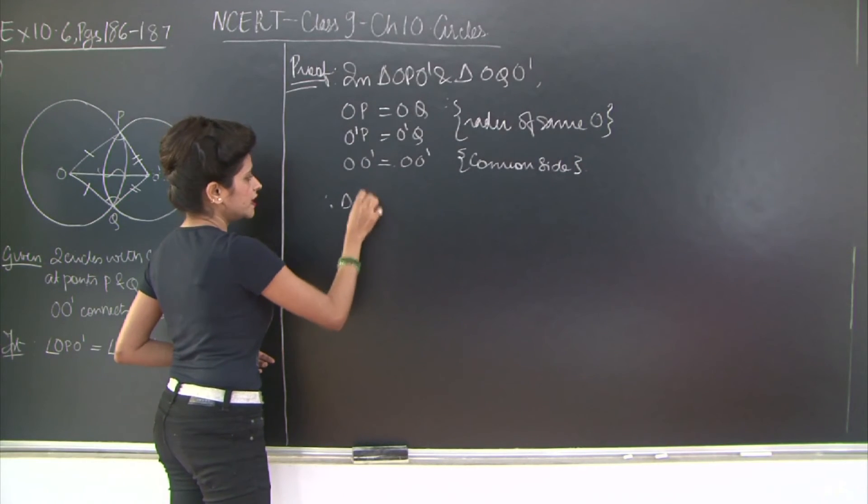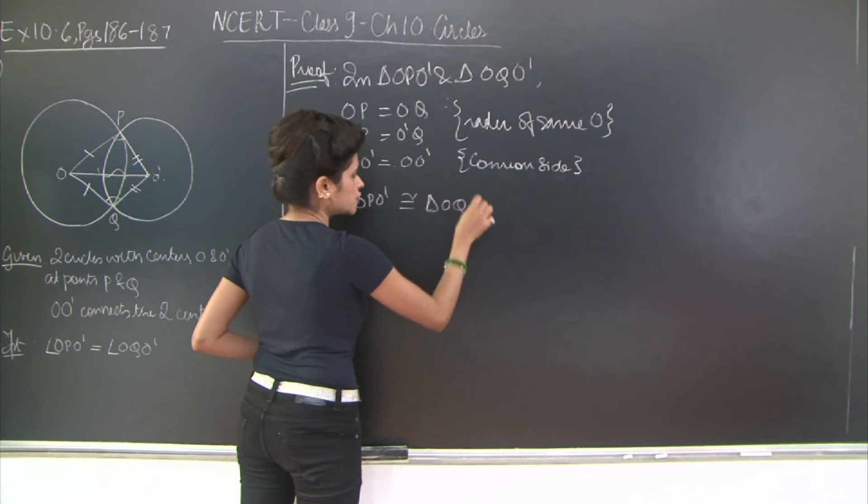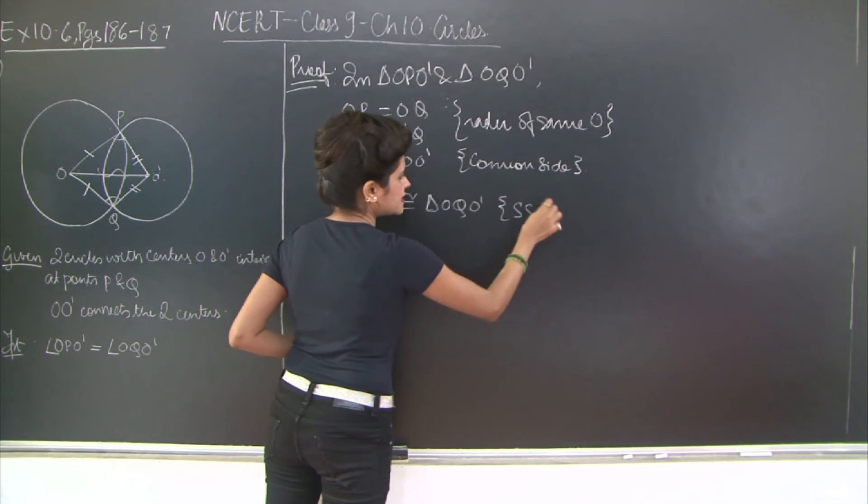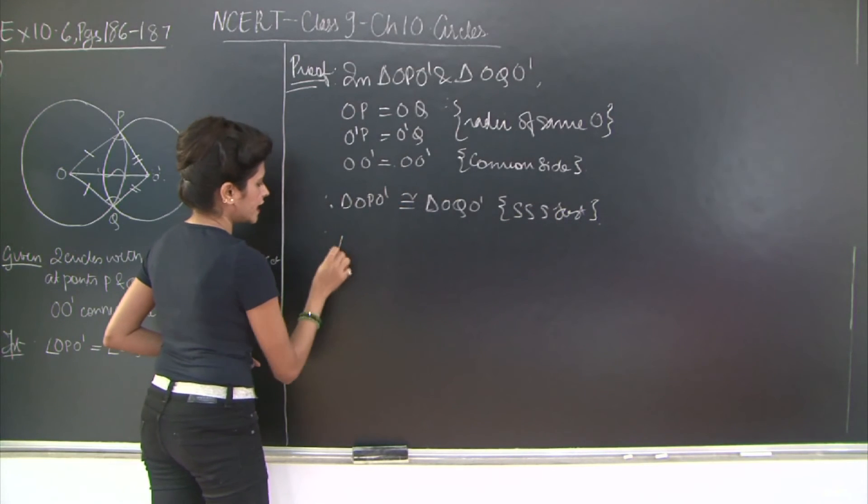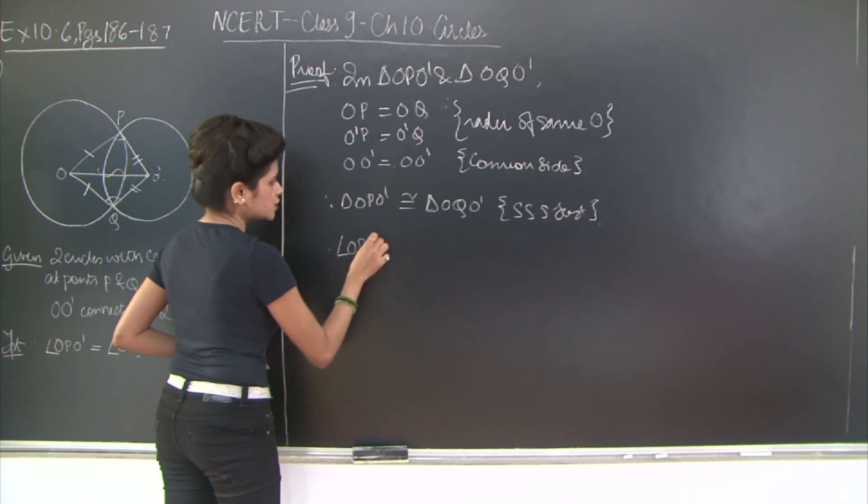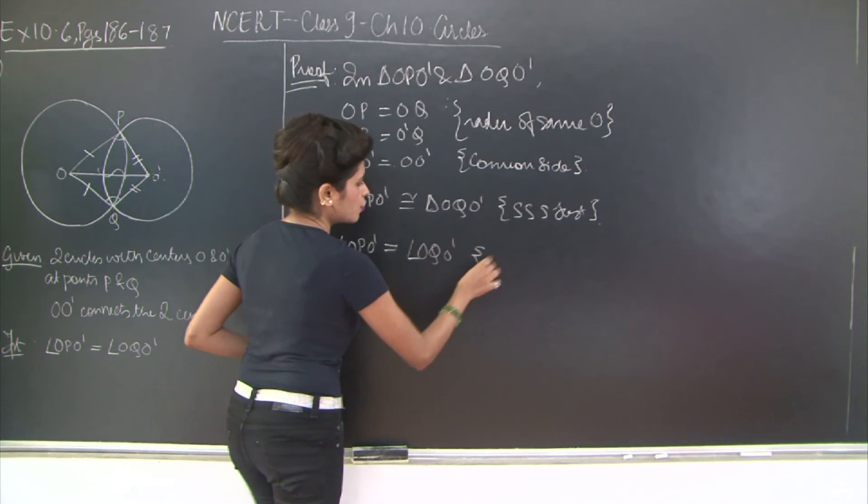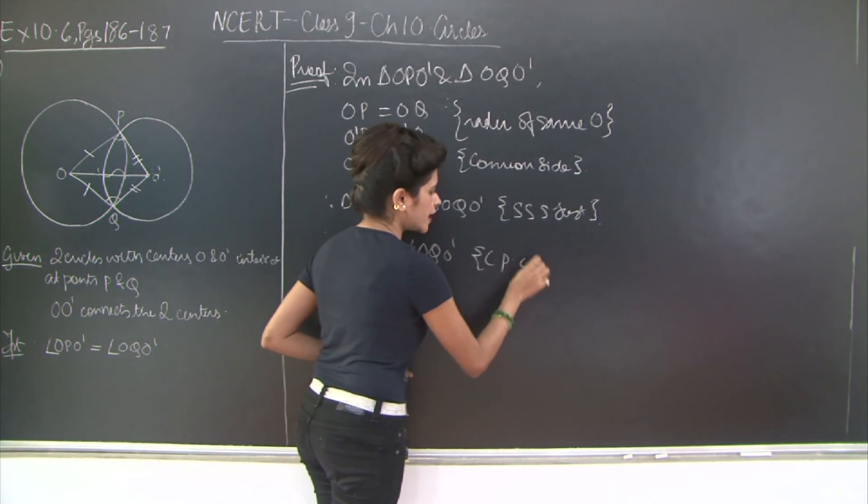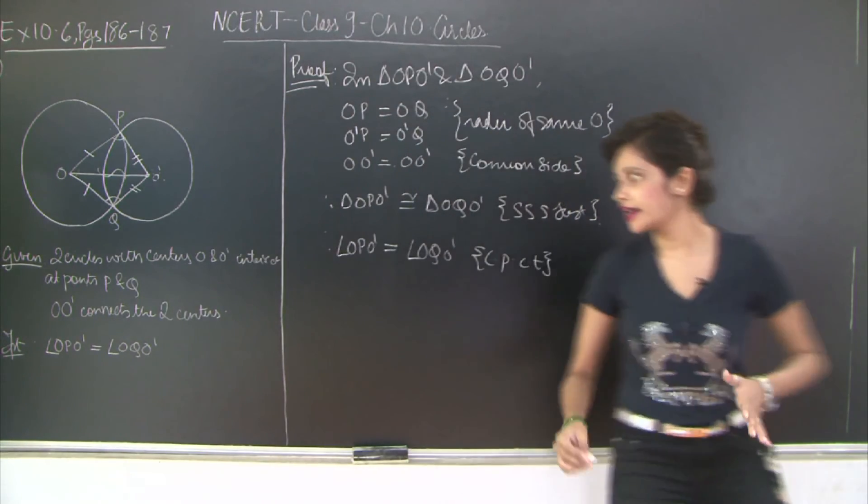Therefore triangle O, P, O' is congruent to triangle O, Q, O' through the SSS or side-side-side test of congruence. Therefore angle O, P, O' is equal to angle O, Q, O' through corresponding parts of congruent triangles or CPCT. So very simple sum. Please take a look at it.